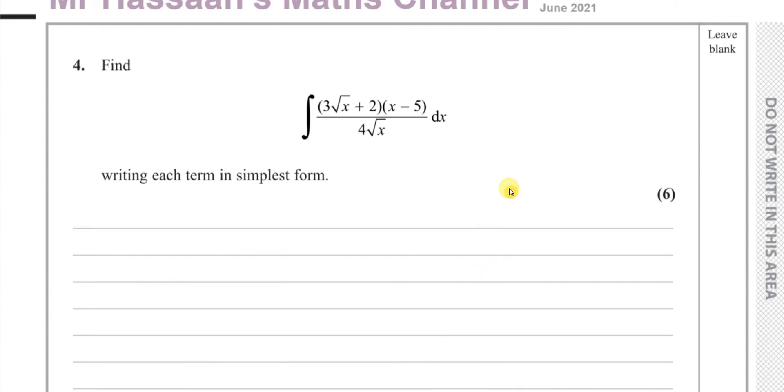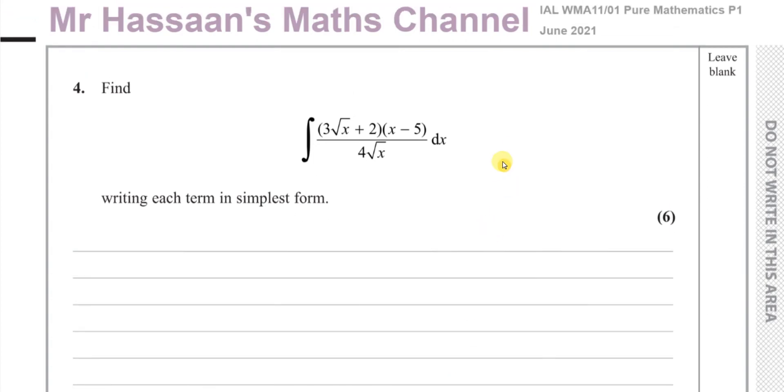Welcome back, this is Mr. Hassan's Maths Channel and I'm now going to be answering question number 4 from the June 2021 Pure Mathematics P1 International A-Level Excel exam. This question is about integration and we have this expression which we have to integrate and write each term in the simplest form at the end.